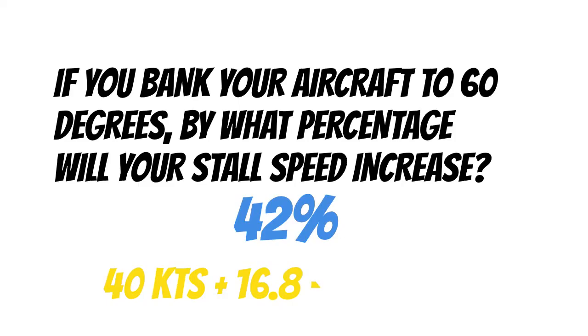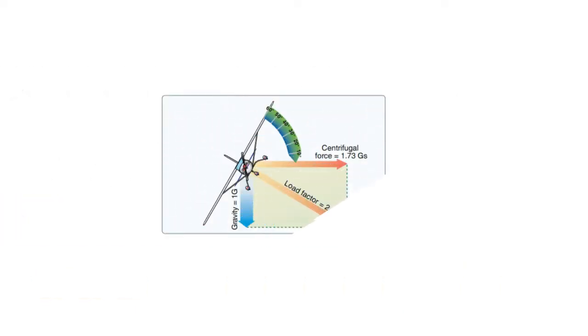So if we have a stall speed of 40 knots, then that 42% would be 16.8. Now our airplane will stall at 56.8 knots, and that could really catch you off guard.